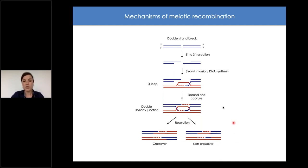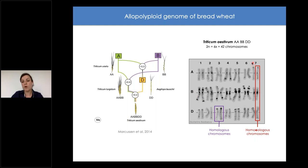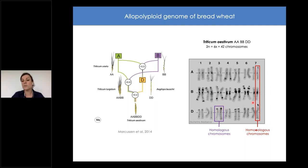A critical step in meiotic recombination is the search for the homologous sequence, which is more complicated in allopolyploid species due to the presence of related but non-identical chromosomes. Bread wheat is an allopolyploid that originated from two interspecific crosses between diploid species. Its genome is composed of three subgenomes that are homeologous — chromosomes with a common origin that evolved independently in different species but are now together in the same nucleus.